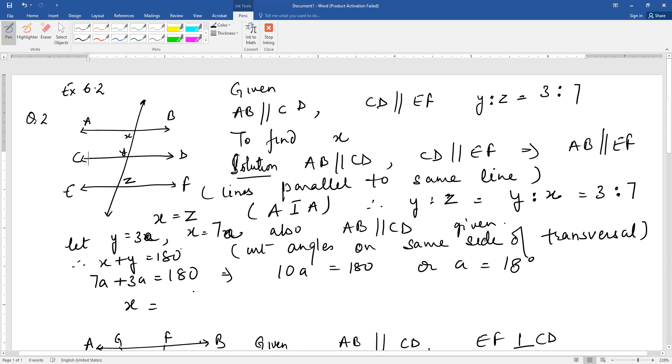That means 7 into 18 degrees. 7 times 6 is 42, 7 times 1 is 7 plus 4, that's 126 degrees.